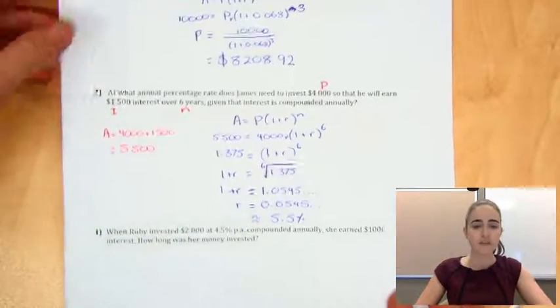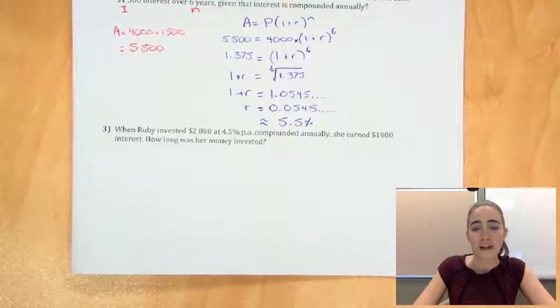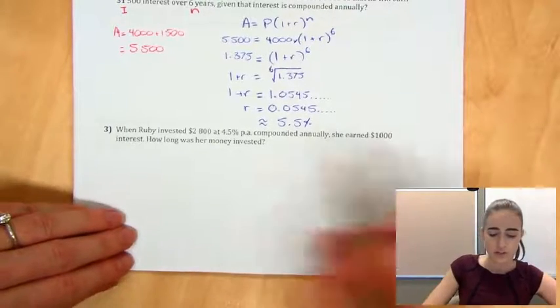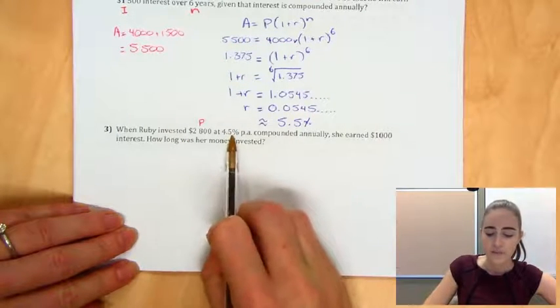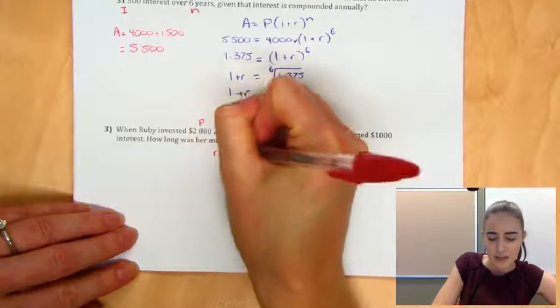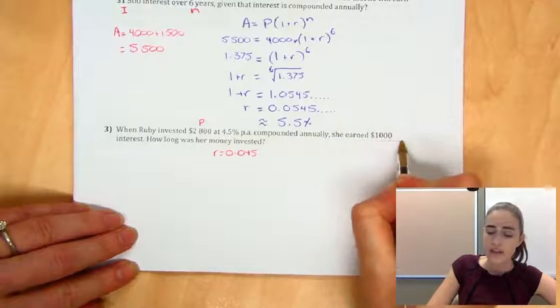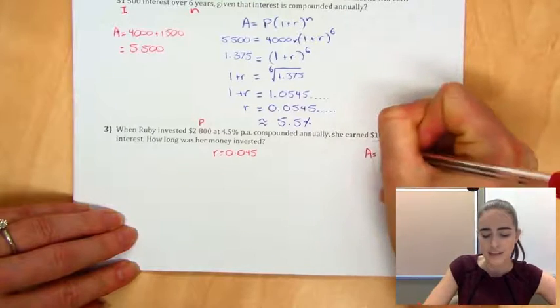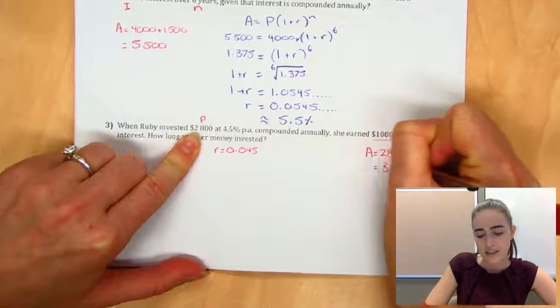So it says when Ruby invested $2,800 at 4.5% per annum compounded annually, she earned $1,000 interest. And we want to know how long her money was invested for. So our $2,800 is what she initially invested, so that's the principal. It's 4.5% per annum. I'm just going to write that underneath. Our rate is 0.045. And she earned $1,000 interest. So just like we did in the question above, to find the total amount in the account at the end, we'd have our 2,800 plus our 1,000. It'll give us 3,800.